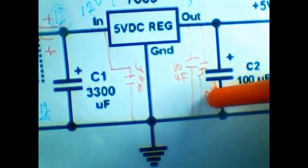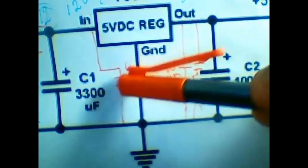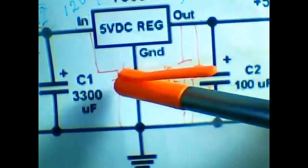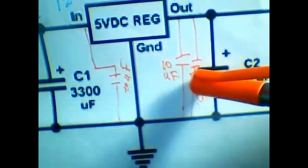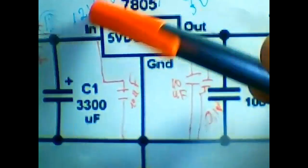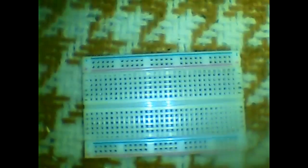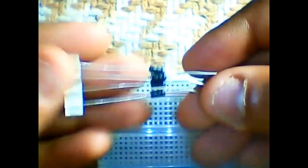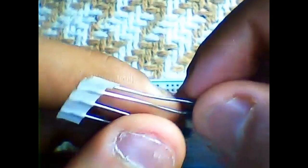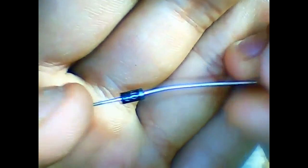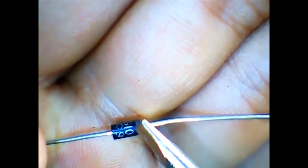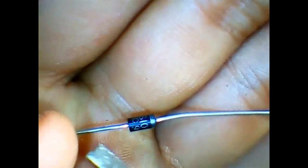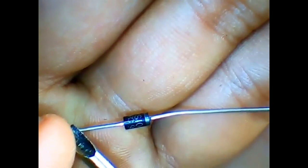The 0.1 microfarad ceramic capacitor looks like this most of the time. It's not really important to put it, so I didn't put it in the schematic, but if you want to put it, it will actually help the regulator. So in this schematic right here, I'll put it in just to show you.